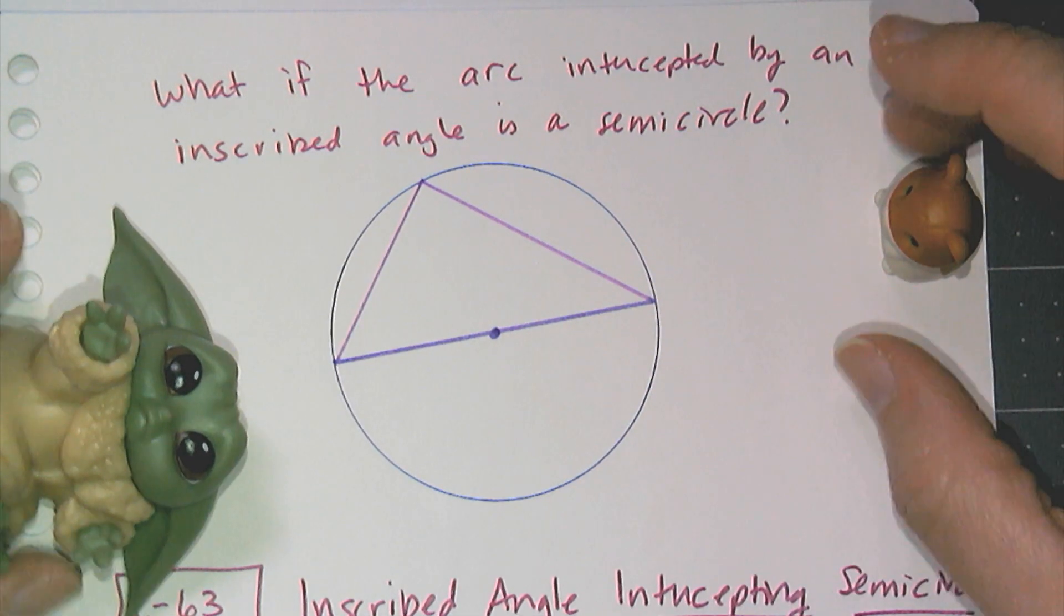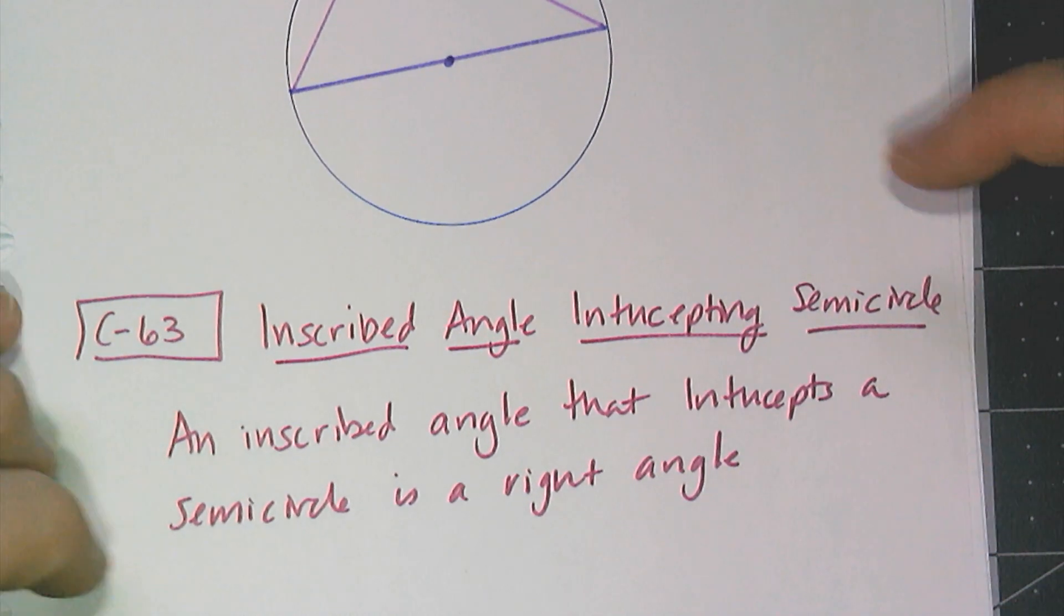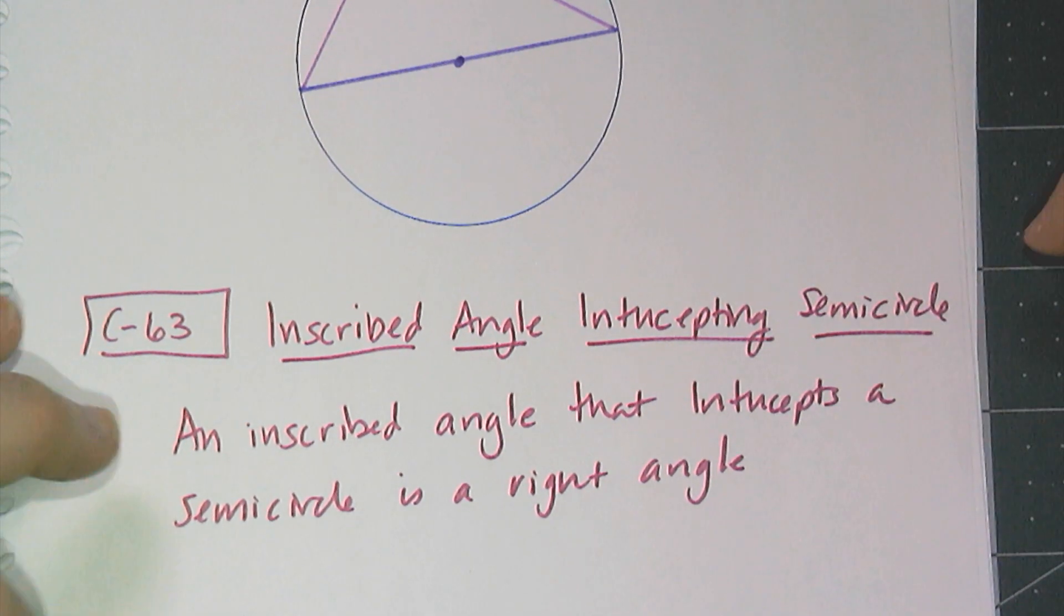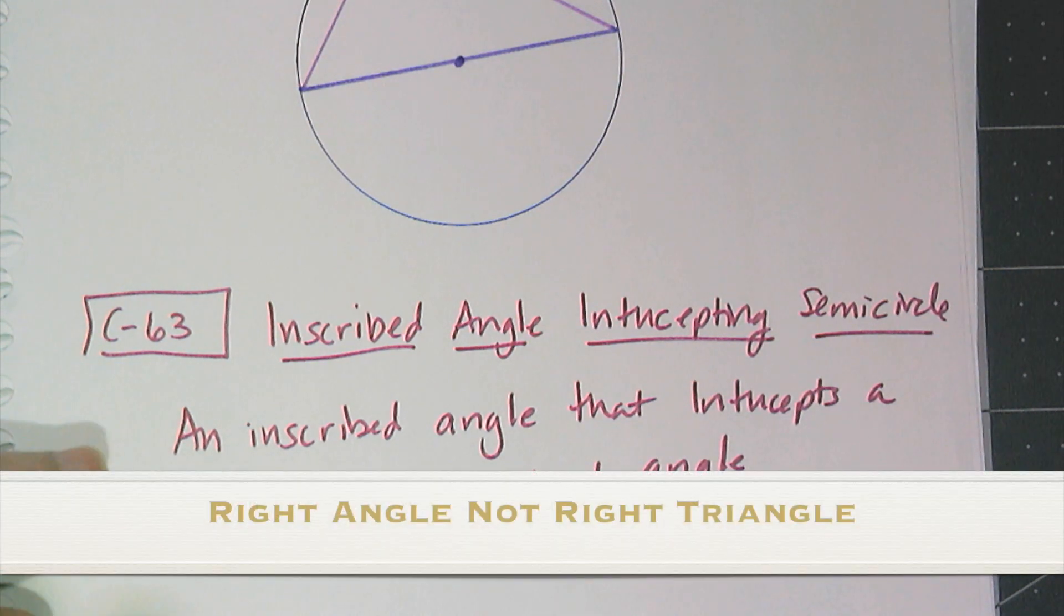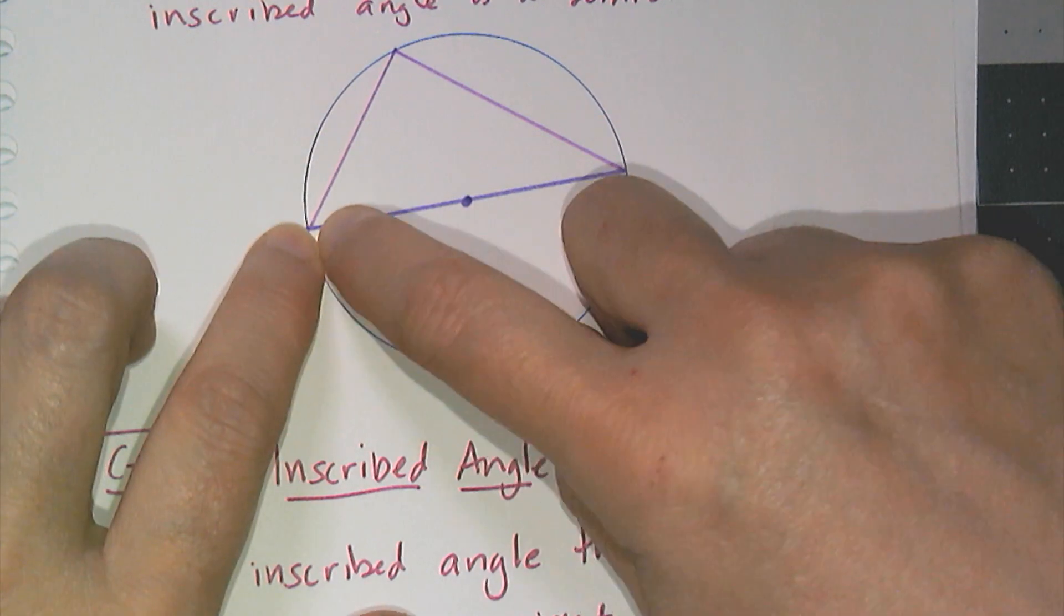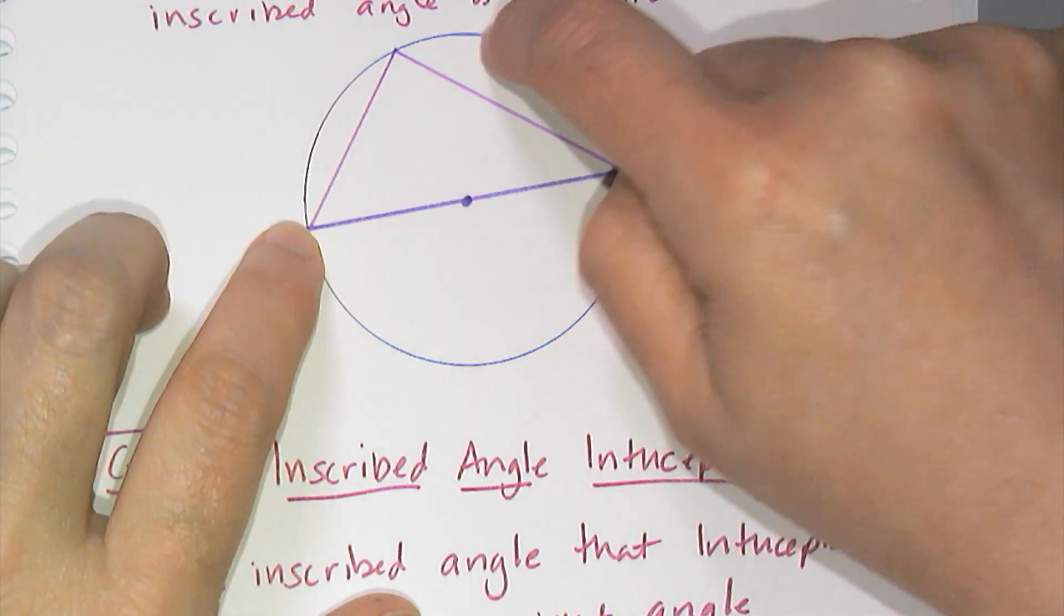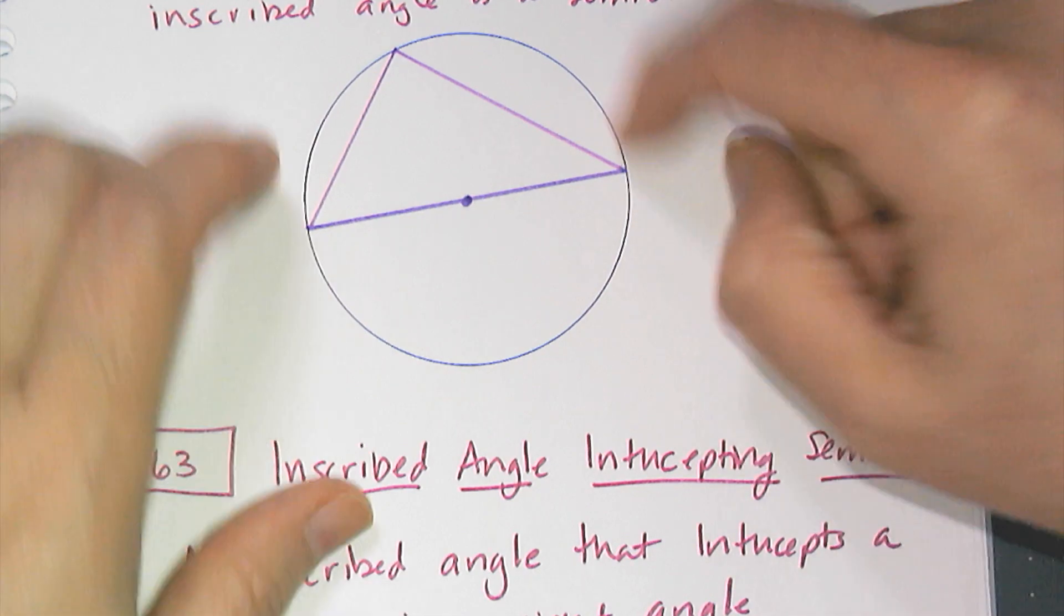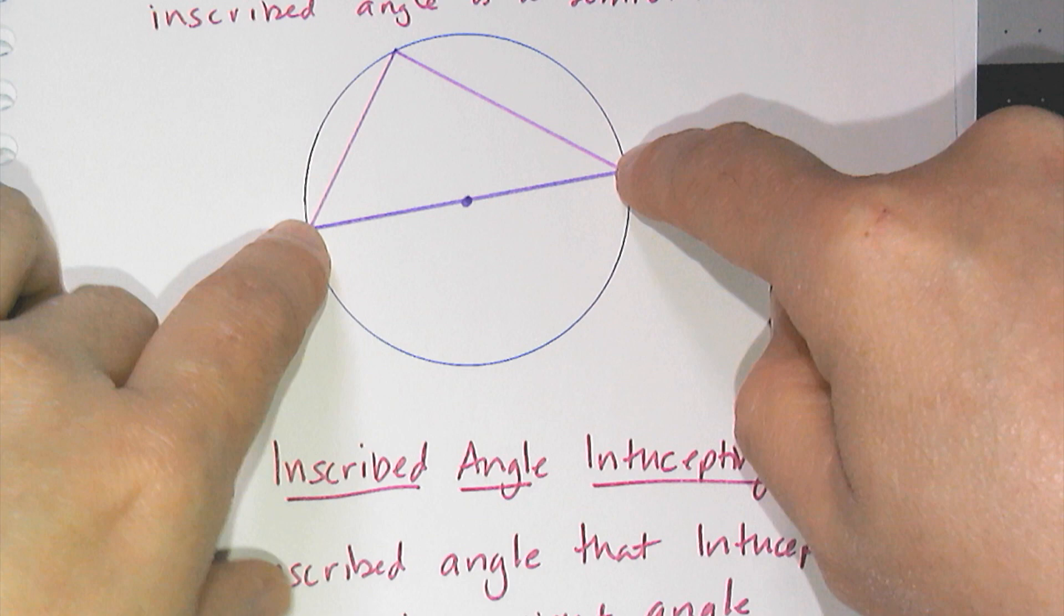And so this gives us conjecture C63, the inscribed angle intercepting semicircle conjecture. And it simply says an inscribed angle that intercepts a semicircle is a right angle. And oftentimes you see this conjecture drawn with a whole series of right triangles. You can actually go to any point on this part of the semicircle and create two chords that are going to create little right triangles.